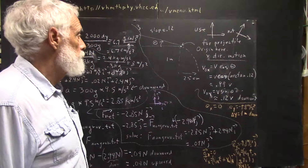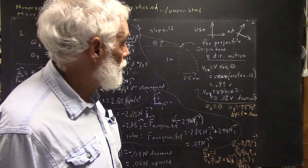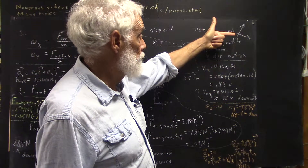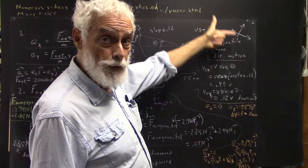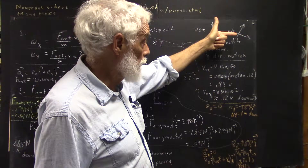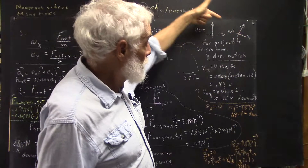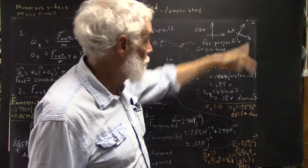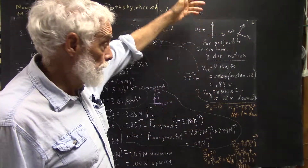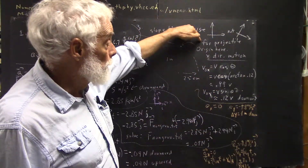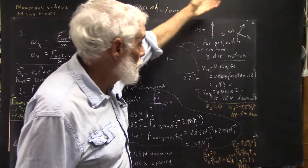How do you analyze this? Do we use a coordinate system where y is vertically upward and x is horizontal, or a tilted coordinate system? There are reasons why you do one or the other. For a projectile, you use the standard system, not the tilted one.